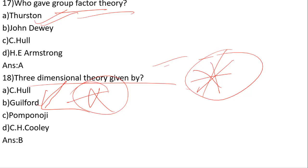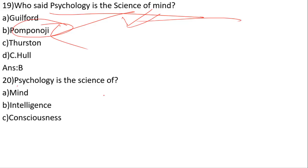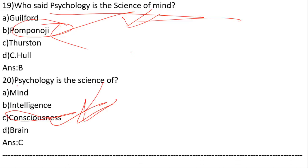Who said psychology is the science of mind? Options: Pompanazzi, Thurston, Hull. The correct answer is option B — Pompanazzi said psychology is the science of mind. And finally, psychology is the science of consciousness — that is the definition of psychology.